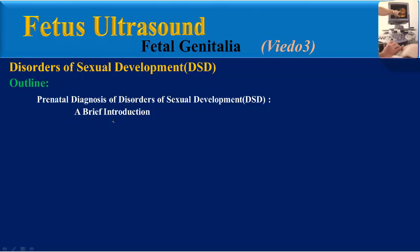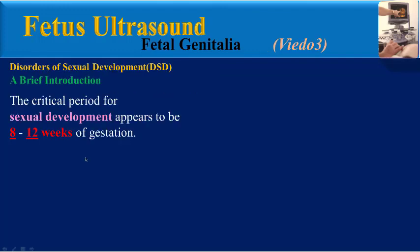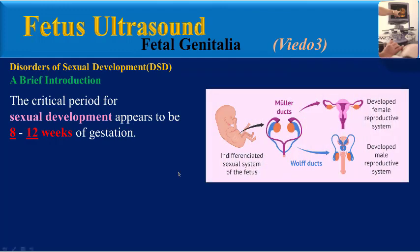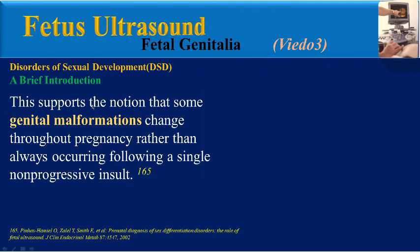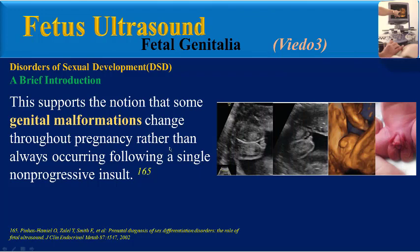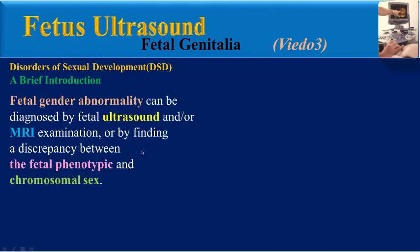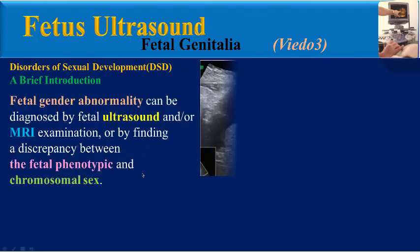The critical period for sexual development appears to be 8 to 12 weeks of gestation. This is suggested by reports of normal-appearing genitalia at 13 to 15 weeks with subsequent abnormalities of size and structure that evolve as pregnancy progresses. This supports the notion that some genital malformations change throughout pregnancy, rather than always occurring following a single non-progressive insult.